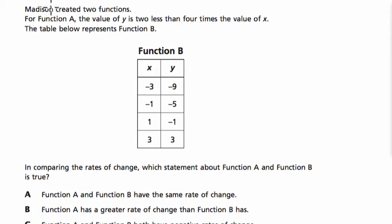Alright, let's read the problem together. It says, Madison created two functions. Function A, the value of y is 2 less than 4 times the value of x.